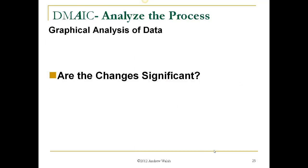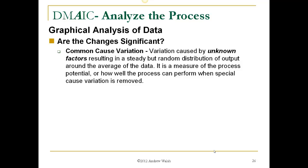So, if there appears to be changes, are they significant? To understand significance of changes, we need to understand two different types of variation. One, common cause variation. This is a variation caused by really unknown factors in the universe that result in a steady but random distribution of output around the average of the data. It's a measure of the process potential, actually, or how well the process can perform when there are no special cause variation or when special cause variation is removed or there's none present.